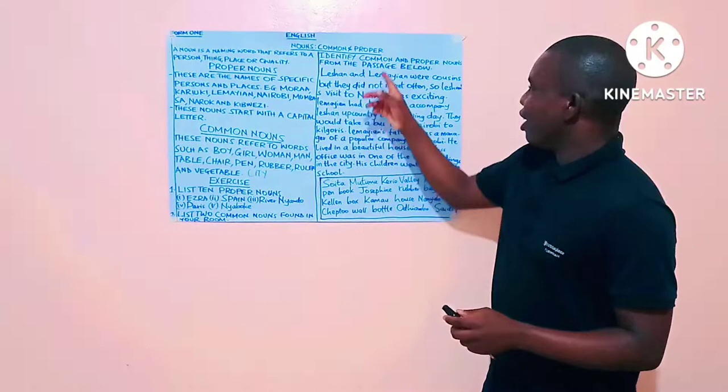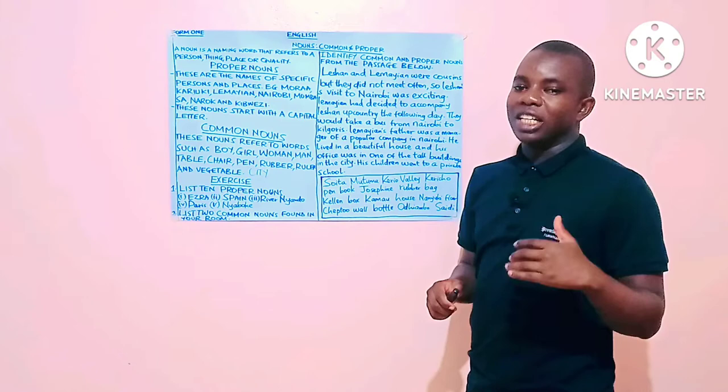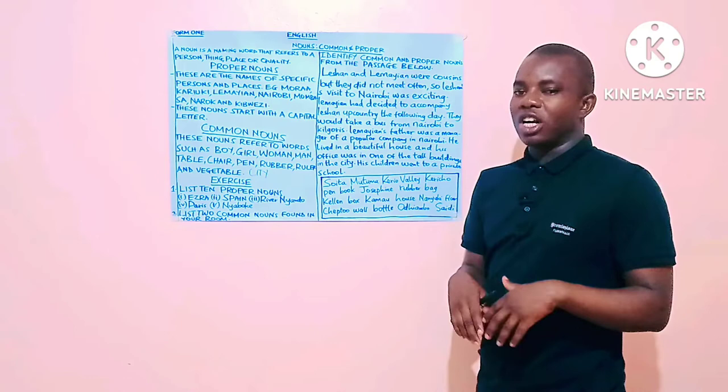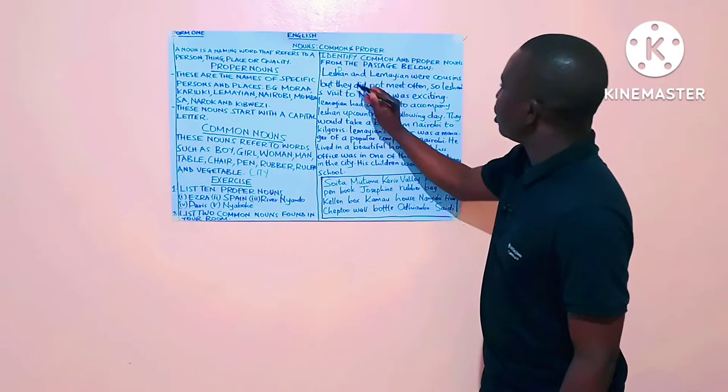In this other exercise, we are expected to identify common and proper nouns from the passage below. So, above the proper noun, I will just assign letter P. And above common noun, I will try to assign letter C. So, we have Leshan and Lemayan. So, Leshan is the name of a person. That is a proper noun. Lemayan is also the name of a person.